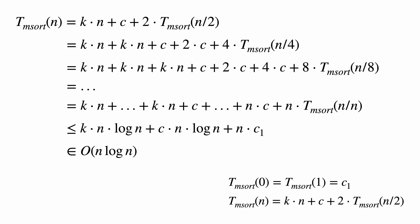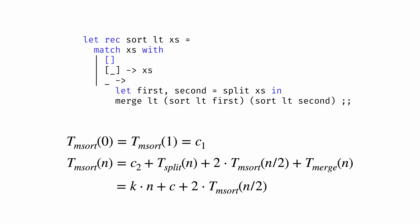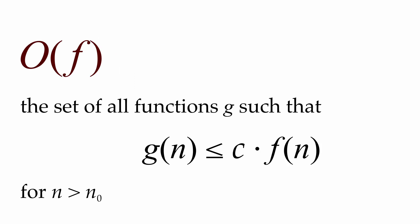So with recurrence equations we can take the code we write and translate it into equations that define a function for how much time it takes for that code to run based on input size. And then, with big O notation, we can characterize the overall growth rate of those functions to get an abstract notion of efficiency — to characterize just how efficient our algorithms really are.